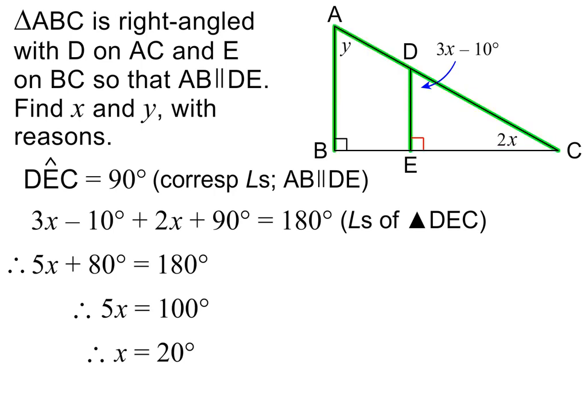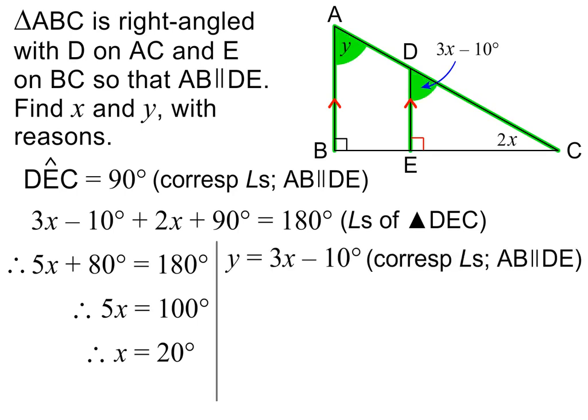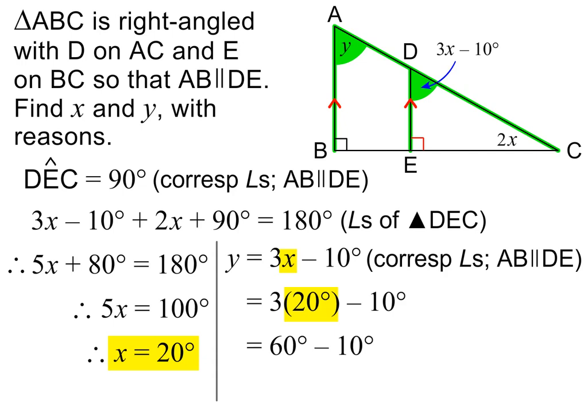To find y, we again use parallel lines and the letter F. This means that y is equal to 3x minus 10 degrees. Don't forget to write the reason. We have just seen that x is 20 degrees, so we substitute 20 degrees in place of x. 3 times 20 degrees equals 60 degrees, and 60 degrees minus 10 degrees equals 50 degrees. So y is equal to 50 degrees. Please pause to check my working.